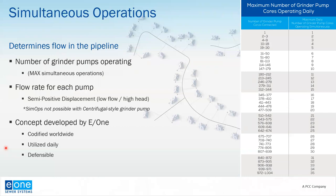This becomes the basis for other calculations like velocity and total dynamic head. The simultaneous operation method cannot be used with systems incorporating other types of grinder pumps, specifically centrifugal grinder pumps. The SIMOPS method was developed by E1 and has been utilized for decades. This method is codified by regulators around the world, used daily by E1 and countless others, and the methodology is defensible and supported by historical and modern real-time field data.